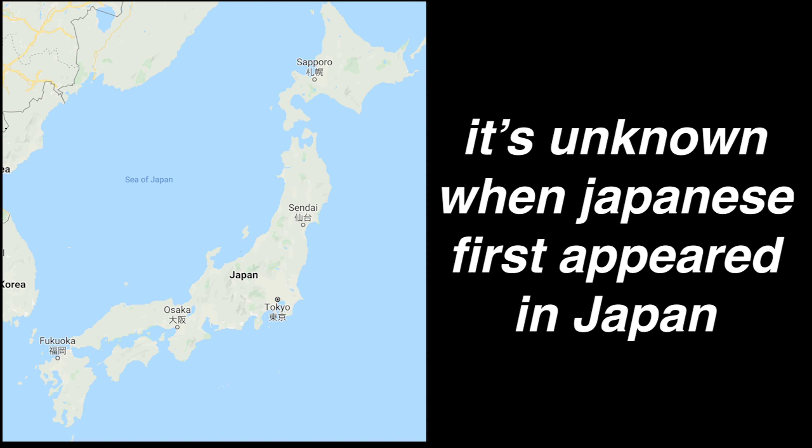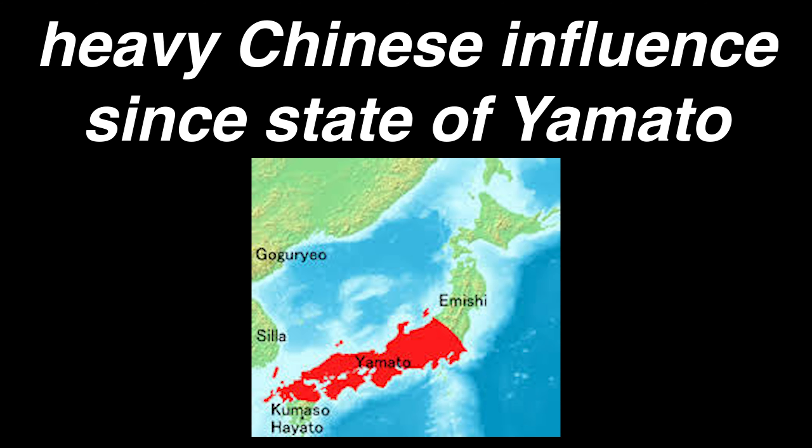Not very much is known about when Japanese started being spoken in Japan. The first major texts we've discovered date to the 8th century, and Japanese had undergone heavy Chinese influence since the establishment of the first state of Yamato. The oldest form of Japanese is called Old Japanese. This is still a period of Chinese influence, especially from Buddhism imported from China, and Japanese adopted the Chinese writing system.